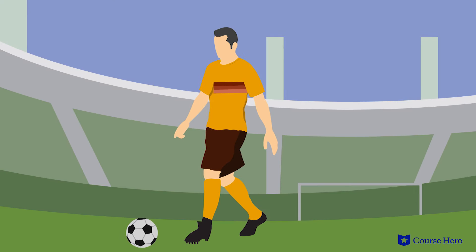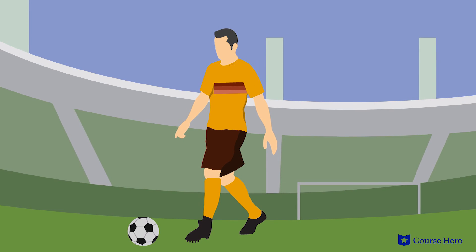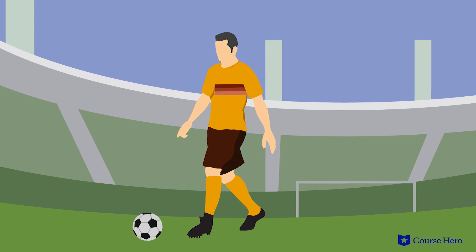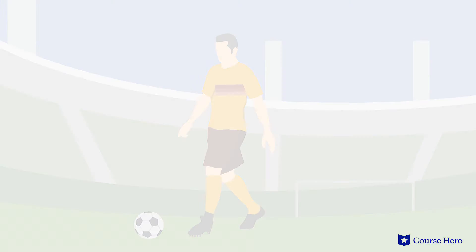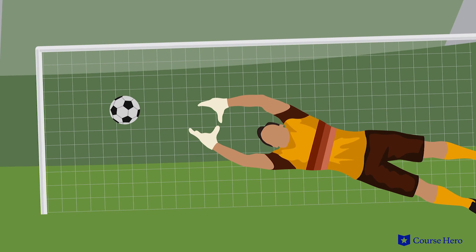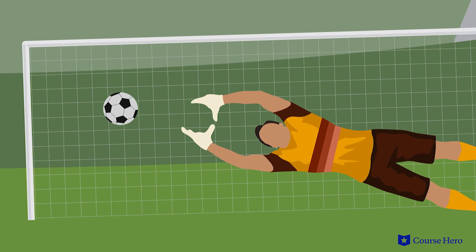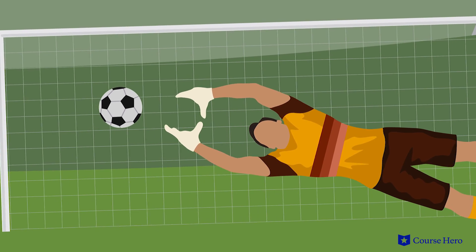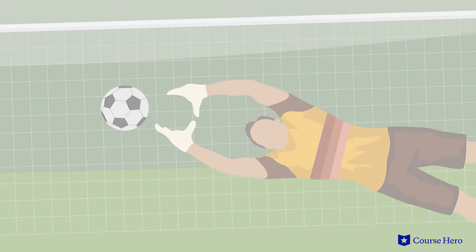For example, if you're a soccer player lining up for a penalty kick, you shouldn't always shoot left. If you did, keepers would eventually realize this and start blocking all of your shots. For a penalty kicker, there is no dominant strategy — they should mix it up every now and then.